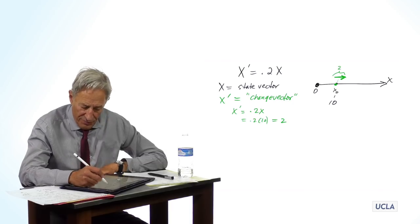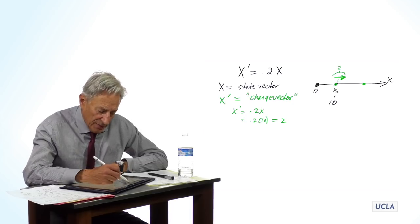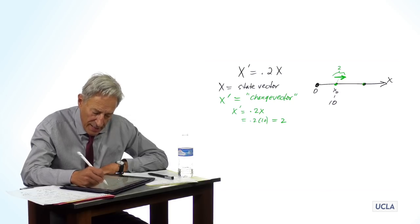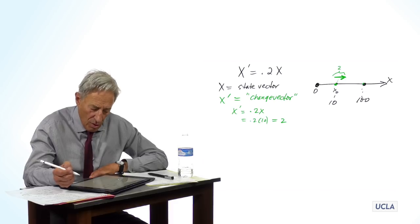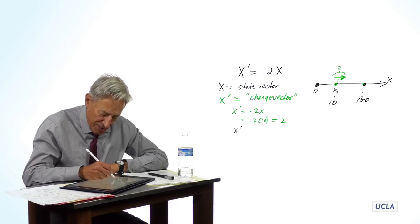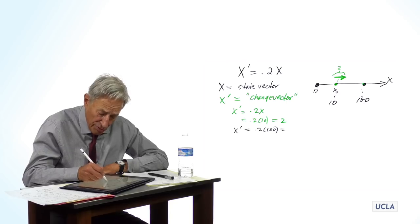At another state point, let's say x equals 100. What is the change vector? The change vector is x prime equals 0.2 times 100 or 20.